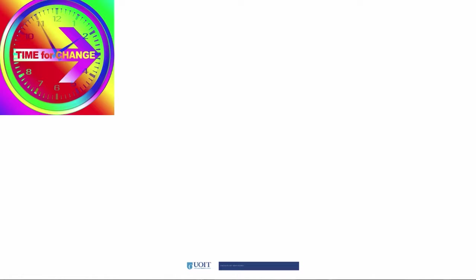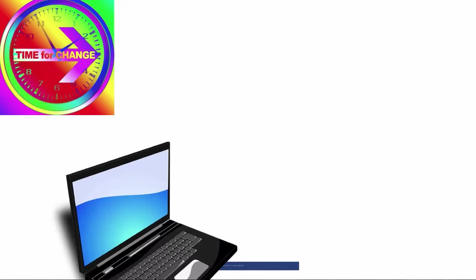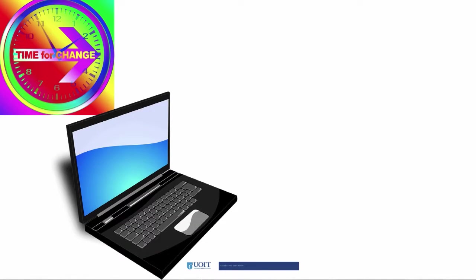Some types of organizational change are systematic. For example, in your personal life, if you're thinking about switching from a PC to a Mac or vice versa, you may be hesitant about working in a new operating system or worry about how Word, Excel, or PowerPoint files may change.